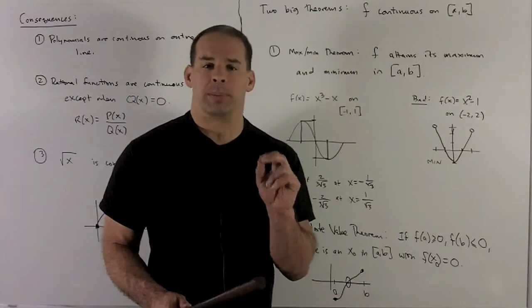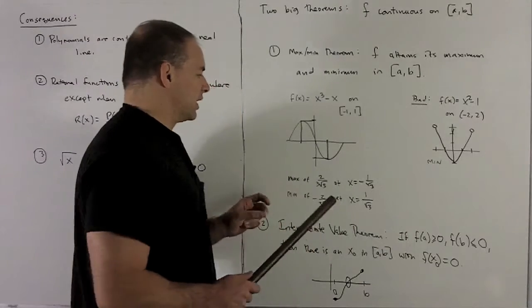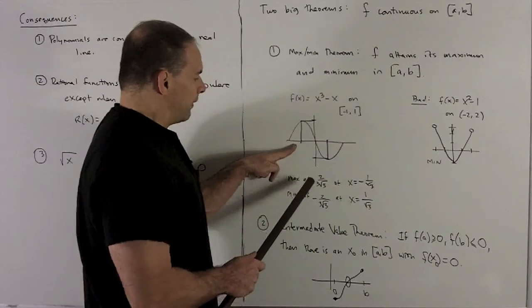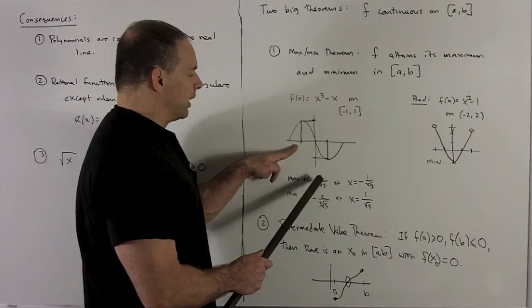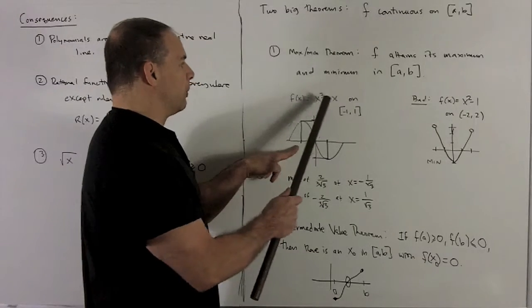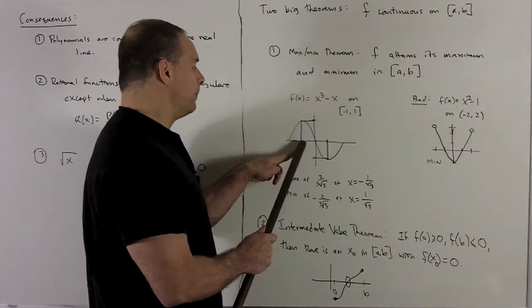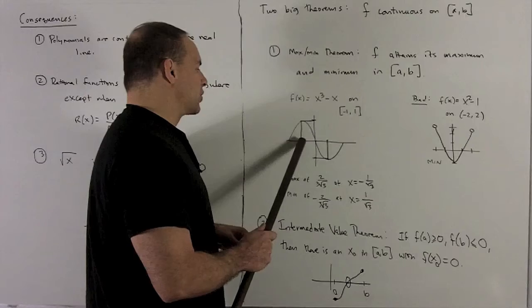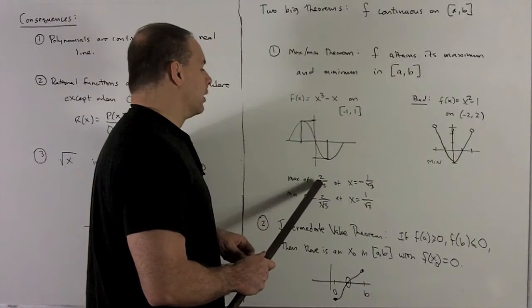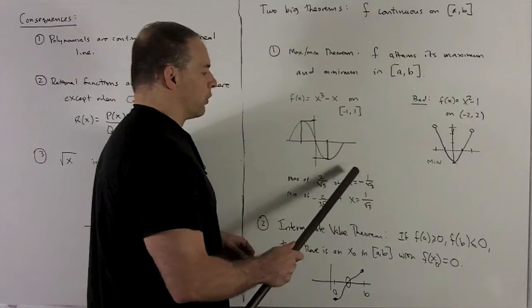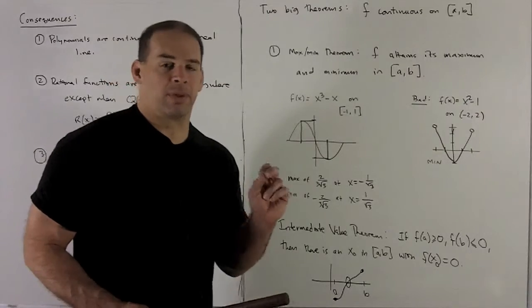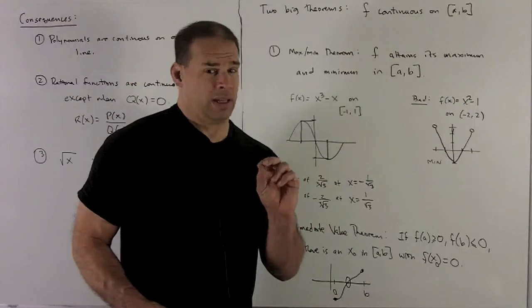There's a little bit of subtlety there, but the point is if, for instance, here we have the max of 2 over 3 times radical 3 for X cubed minus X on minus 1 to 1, I can actually find a point that's going to map me up to that value there. And that's going to be at minus 1 over radical 3. Same for the minimum.